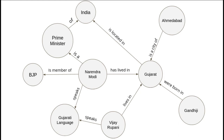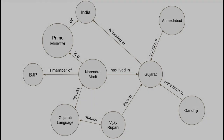Here, the only difference is that the nodes are the names of persons, the names of objects, the names of movies, years, etc. And the edges tell us how these things are related to one another.